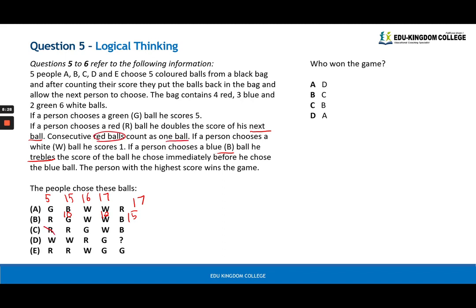Next one: red is nothing, right? Remember, consecutive red balls count as one red ball, so this is ignored. This one is the same case. Green is five, we're going to double it, we get 10. White is one, and blue, the score is tripled for the one before, so this would have been 11. Triple white we get three, so we add it on we get 14.